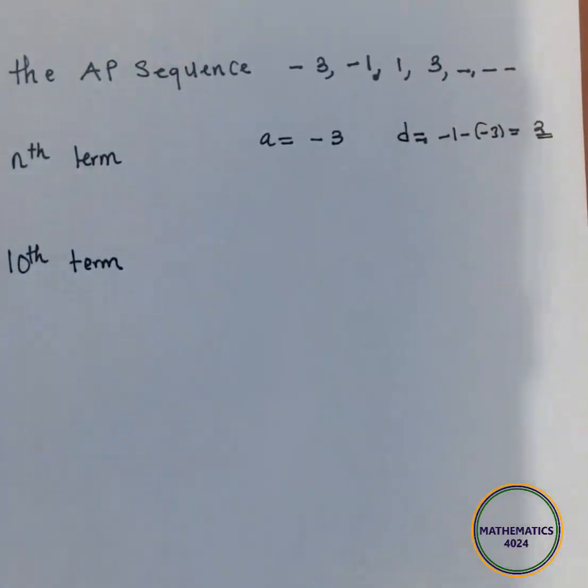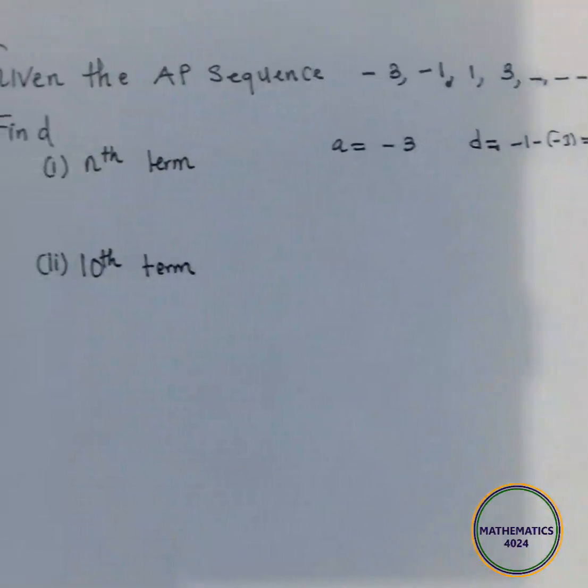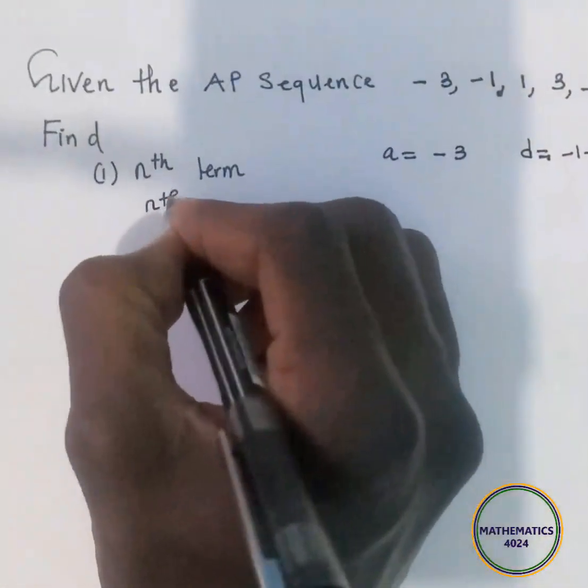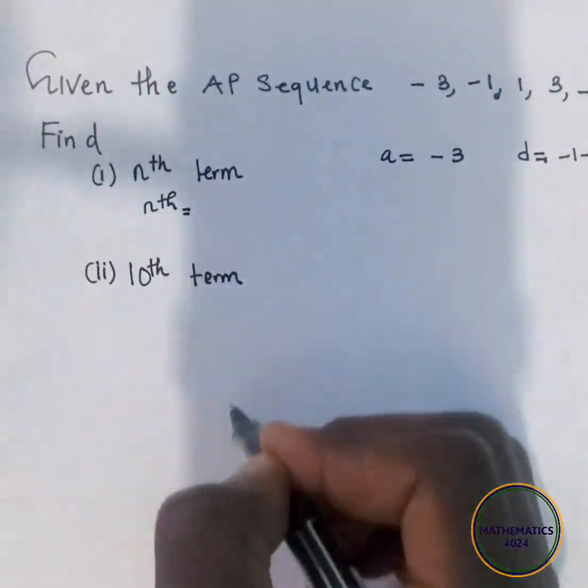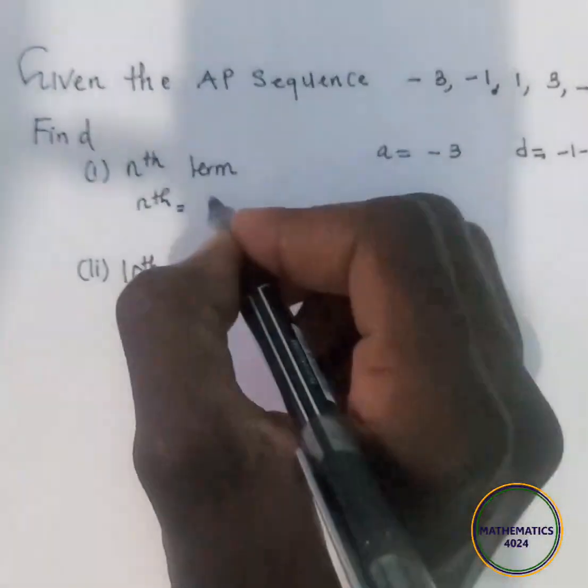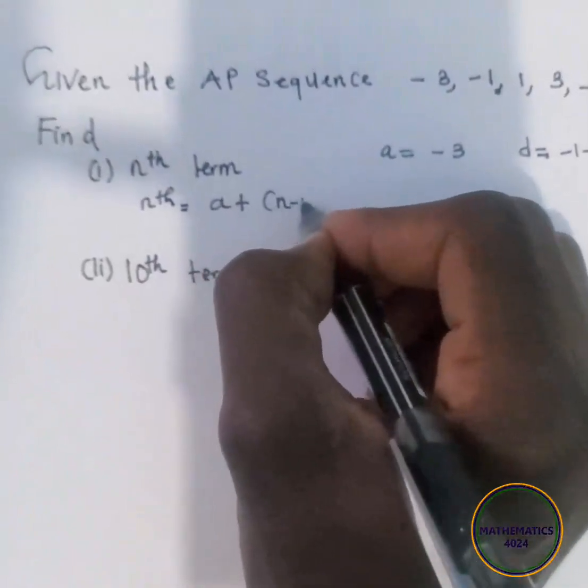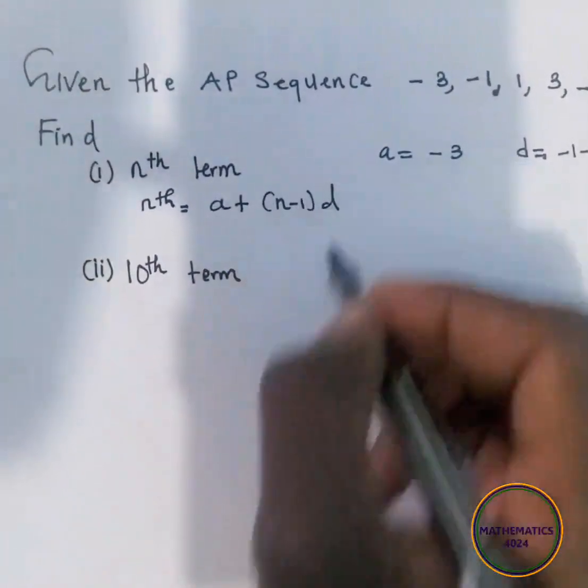Now that our common difference is 2, we can now come and plug in the values. The nth term is given by a plus n minus 1, multiplied by d.